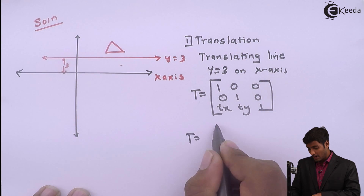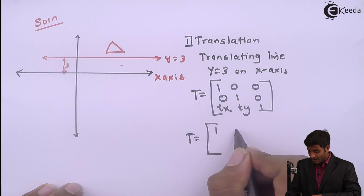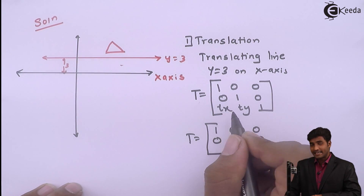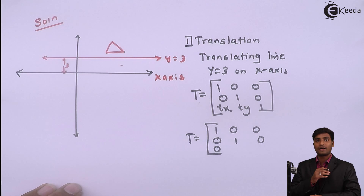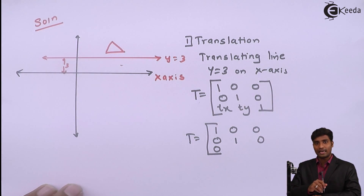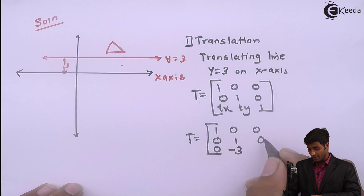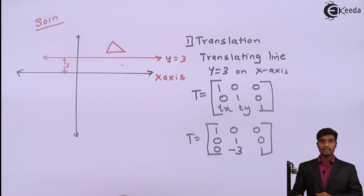Replacing the values of Tx and Ty into the translation matrix: [1,0,0 / 0,1,0 / 0,−3,1]. Tx is 0 because we are not translating along x, and Ty is −3 because we are moving in the downward direction. This is the translation matrix for the first transformation.